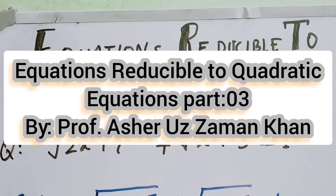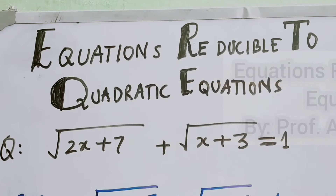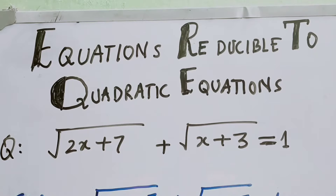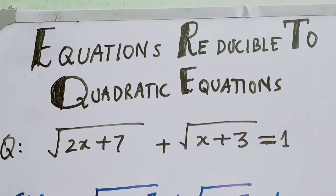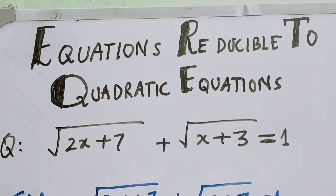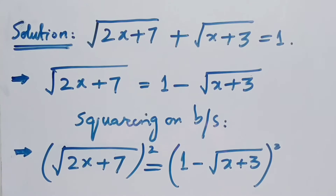We were discussing equations reducible to quadratic equations, and in that we had discussed different forms. Now we have a form which involves a root sign. We will solve this and see which way we can solve it. If we make the verification, we will discard values that don't verify and keep only the verified values.